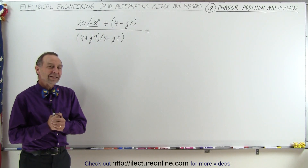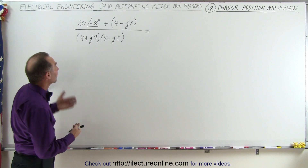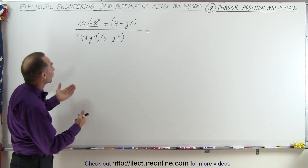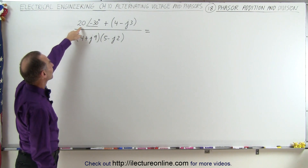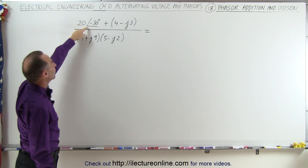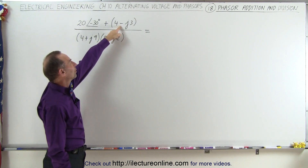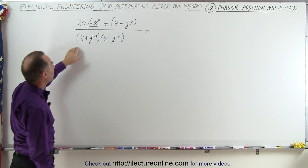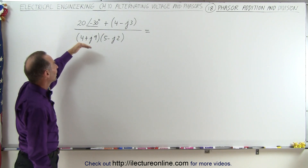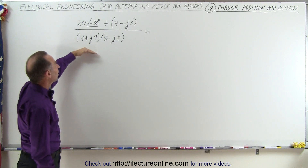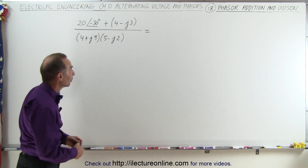Welcome to our lecture. Now to give us some more practice, let's do some addition and some division here. On the numerator, we have something that's expressed in terms of magnitude and the phase angle, and then we have the complex number representation here. In the denominator, we're multiplying two complex numbers together, and then we divide the denominator into the numerator. We'll show you how.